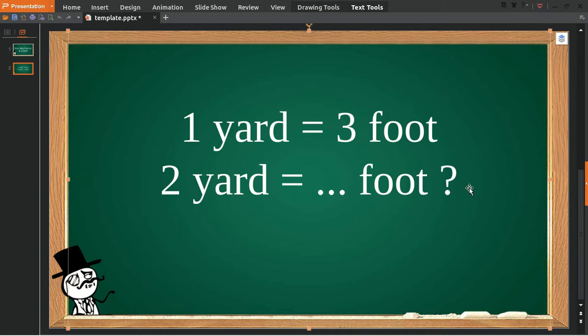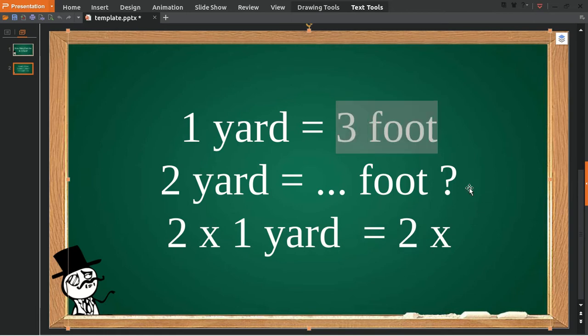The first thing you need to do to solve this problem is write down the 2, which you have from here. Then you multiply the 2 with 1 yard and give it an equal sign. Because you have 2 on the left, you must have 2 on the right as well, so you multiply it with 3 feet.